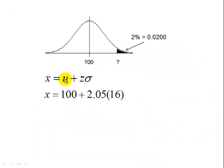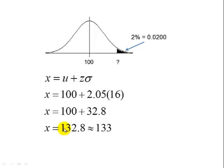Going back to the problem, mu is 100, z is 2.05, our standard deviation is 16. Multiplying these two together gives us 32.8. Add it to 100, and the score is 132.8. Since IQ scores are discrete numbers, we round this to 133. So in order to join Mensa, your IQ score would have to be 133 or more.